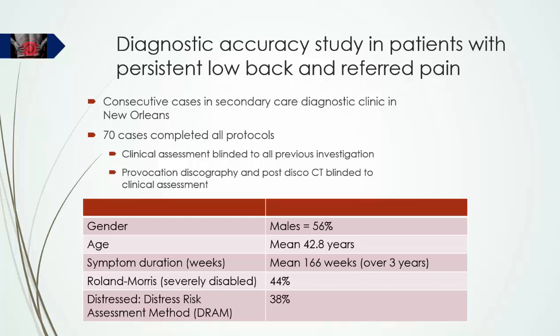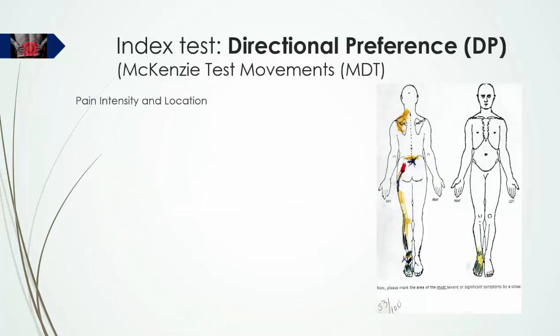All patients completed a number of questionnaires, one of which was the Roland Morris Disability Questionnaire, which allows patients to be categorized into one of four disability groups. In this sample, 44% were severely disabled. Another instrument used was the Distress Risk Assessment Method, or DRAM, and 38% of the sample were classified as distressed. Each patient completed colored pain drawings and scored pain intensity on visual analog scales prior to and after every part of the assessment protocol.